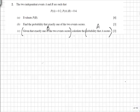This is a use of Bayes' Theorem. The probability of A given B is equal to the probability of A and B over the probability of B.